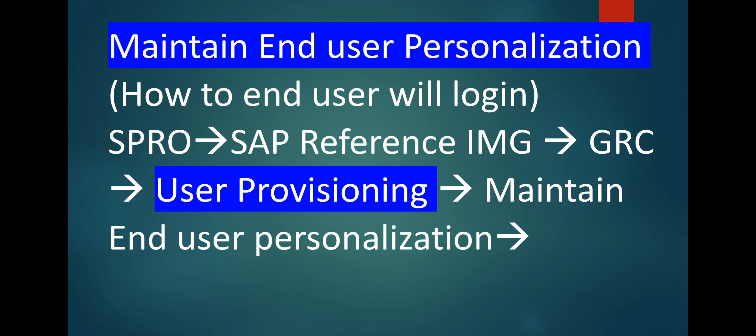Next is maintain end user personalization — how the end user will login, i.e., the look and feel for end users regarding your access forms, whether it is production access form or non-production access form. Maintain end user personalization by executing transaction SPRO > SAP Reference IMG > GRC > User Provisioning > Maintain End User Personalization.